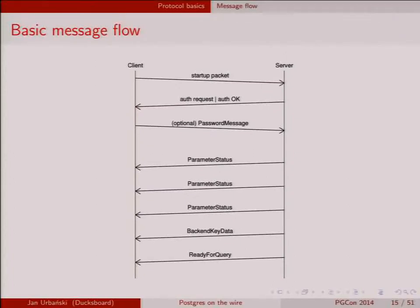The initial exchange works like this: startup packet, then either an auth request or an AuthenticationOK from the server, then the client optionally sends a password message, then a bunch of parameter status messages, then something called backend key data, and then a 'ReadyForQuery' message — meaning we've entered query processing mode and we're done with the initial setup.